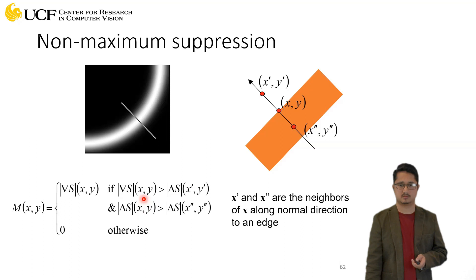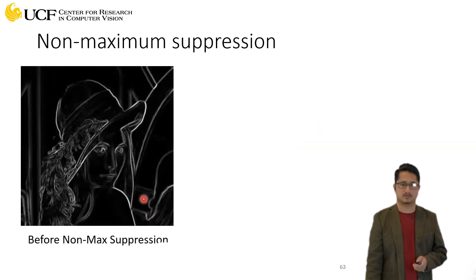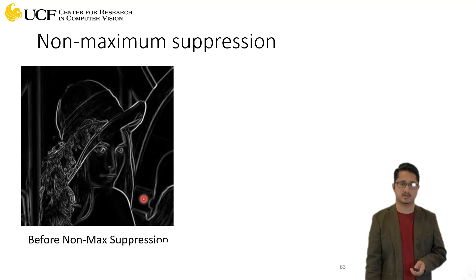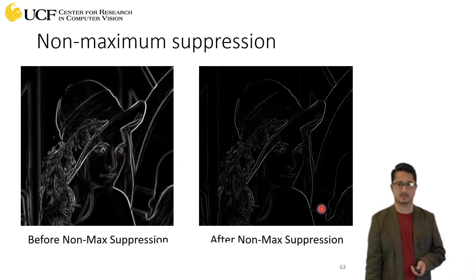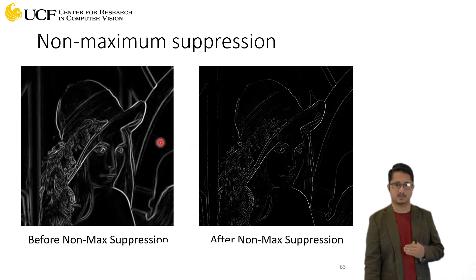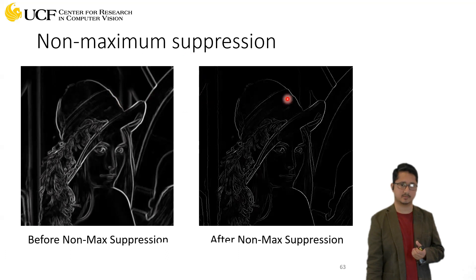So let's see how the edges will change. This is before non-maximal suppression and after suppression you can see what it's actually doing - it's actually thinning your edges. If you focus on the edge of this cap over here in the original version, you can see it's kind of thick, but what this non-max suppression is doing is making it thinner.